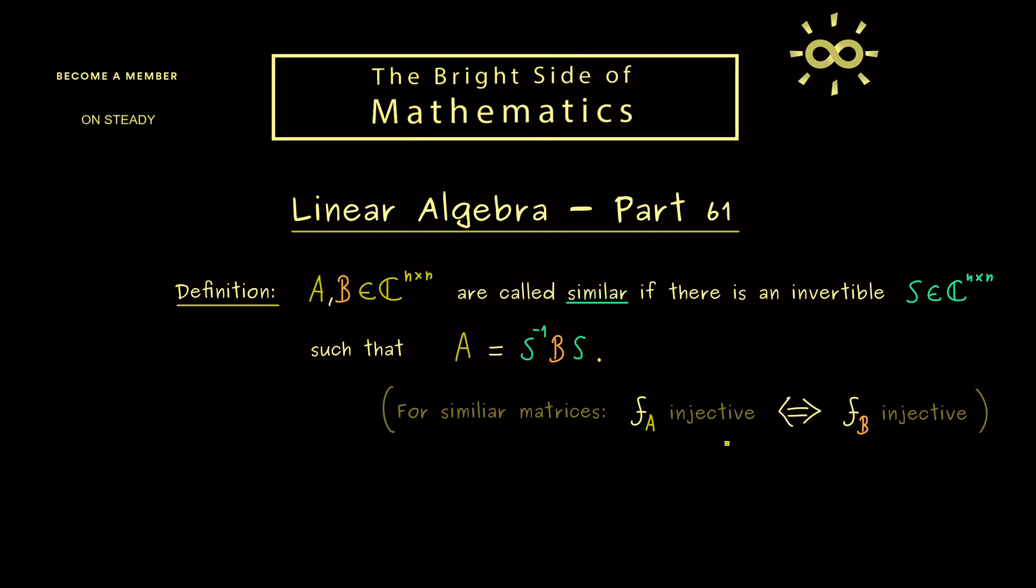In fact, I would say this is a very nice exercise, because it's about the kernel of the two matrices A and B. However, I would say this is a very nice property you should immediately remember when we talk about similar matrices. Moreover, you can also show that the equivalence holds for the surjectivity as well.